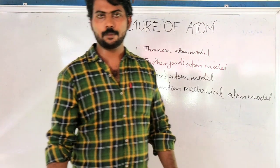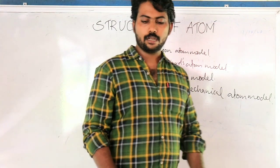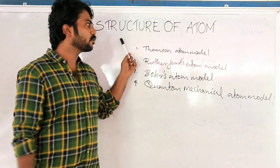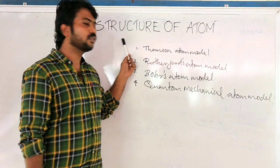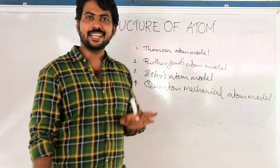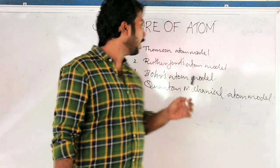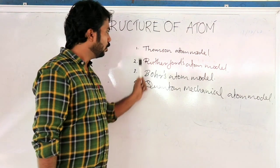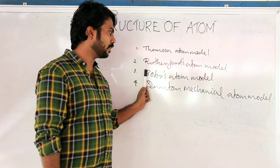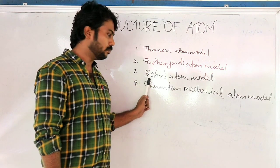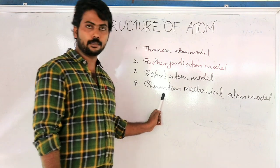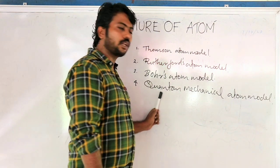The structure of the atom means a model. There are four atomic models. One is Thomson. Two is Rutherford. Three is Bohr. And four is Quantum Mechanical.